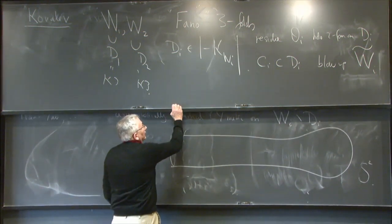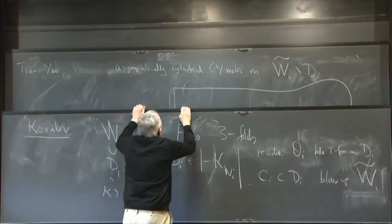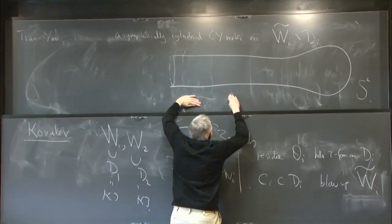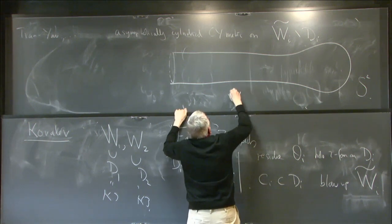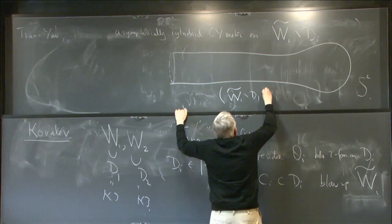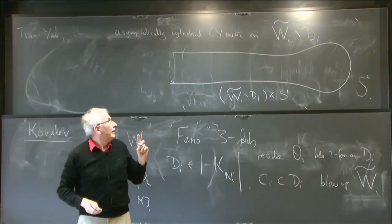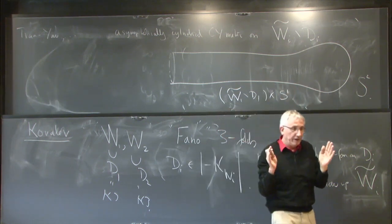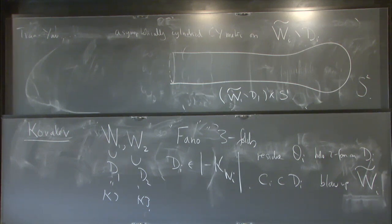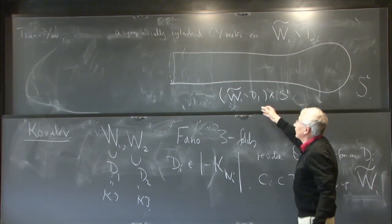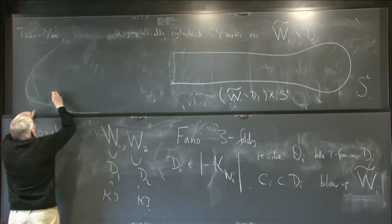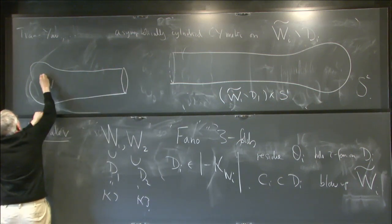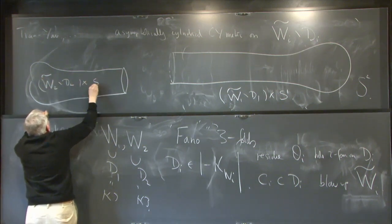This follows from a version of the general complex Monge-Ampère theory. What Kovalev does is take W̃₁ minus D₁, multiply by a circle to get a 7-manifold. This has holonomy contained in G2 but in a trivial way — just taking a product with the circle factor, SU(3) sitting inside G2. We do the same on the other side with W̃₂ minus D₂ times S¹. Then we glue these together on the cylindrical parts in a slightly non-obvious way.